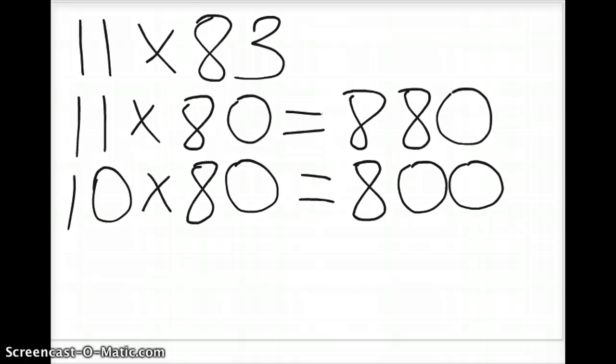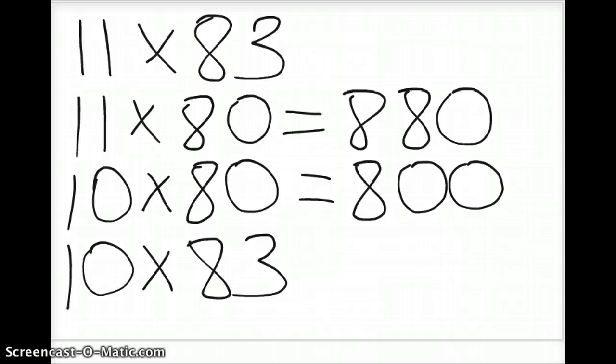I also could have taken the 11 down to 10, and then anything times 1 is that other number. So 1 times 83 is 83, and anything times zero is going to give me a zero. I have one zero, so 830.